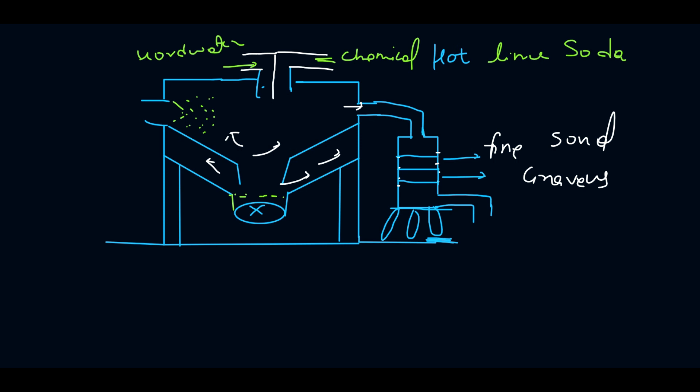The water passes through fine sand and gravels so that it becomes ultra-soft. We get soft water at the outlet. This process is also a continuous process in which we continuously get soft water from hard water.